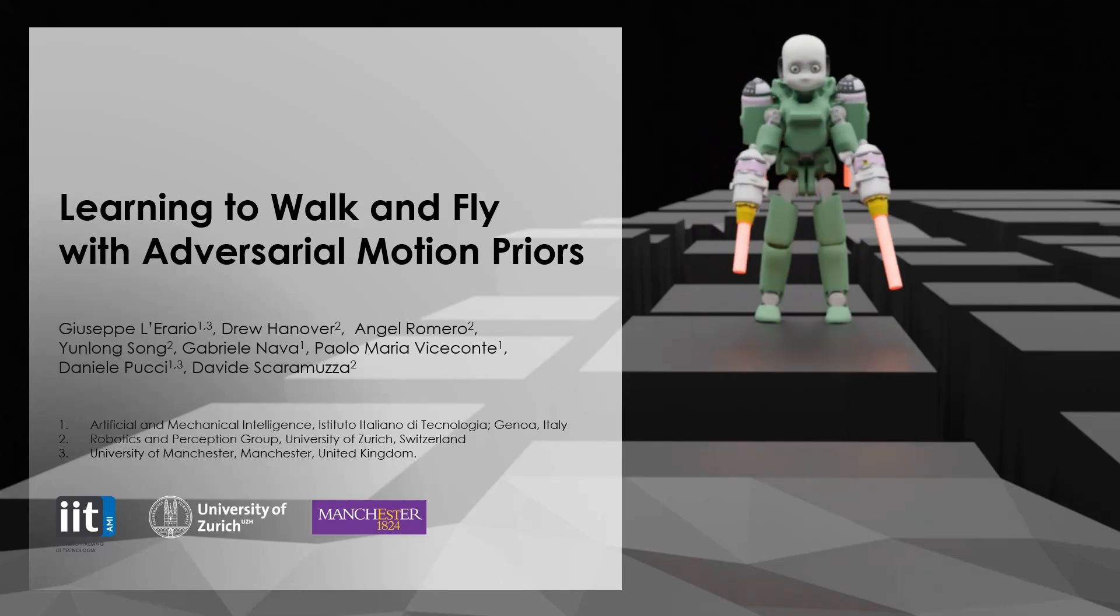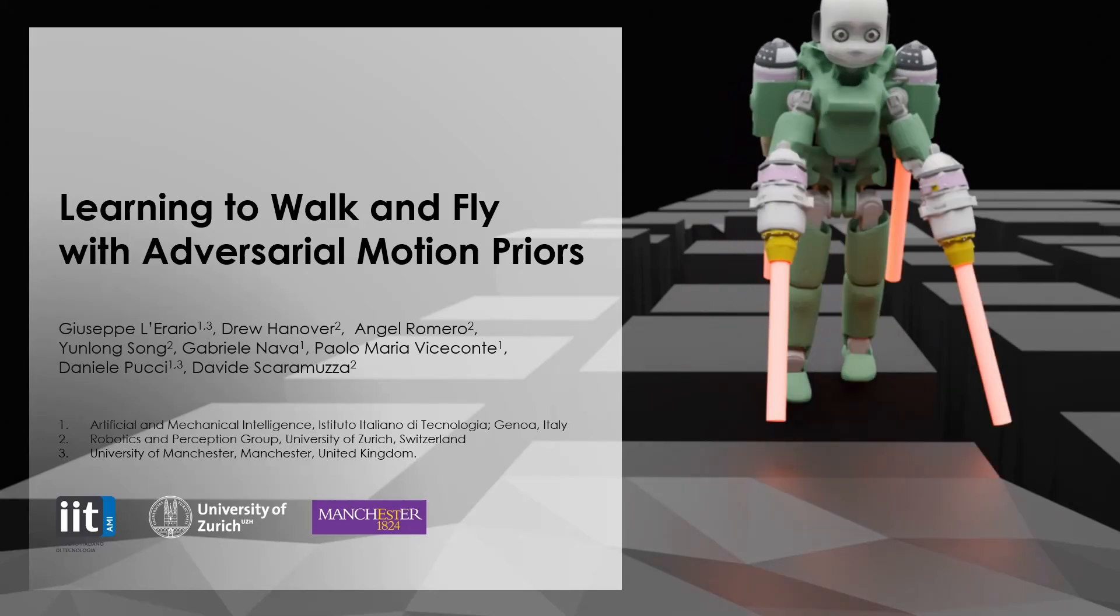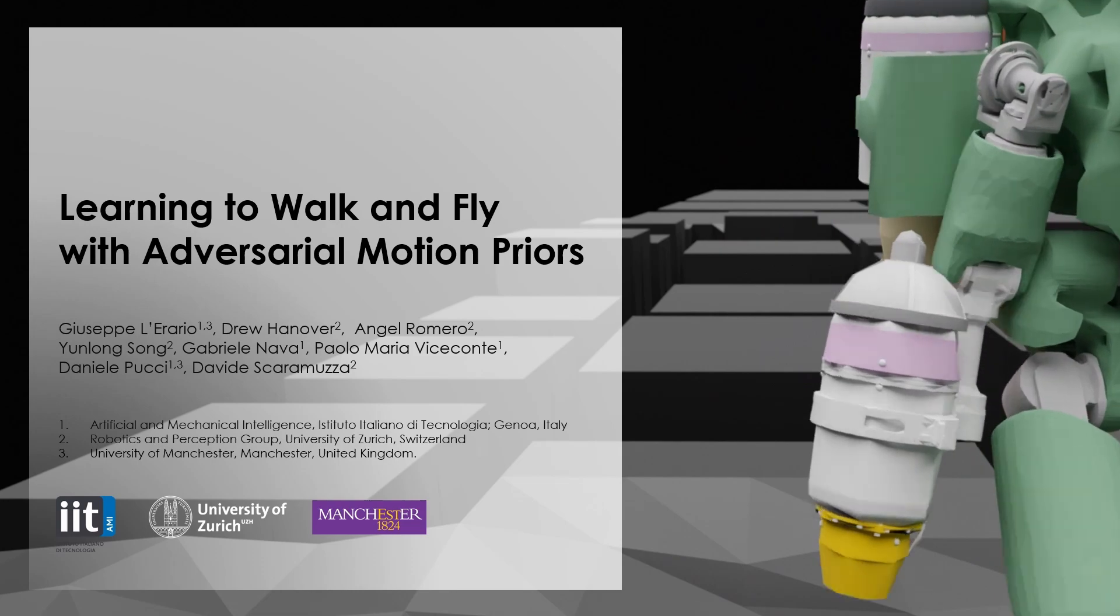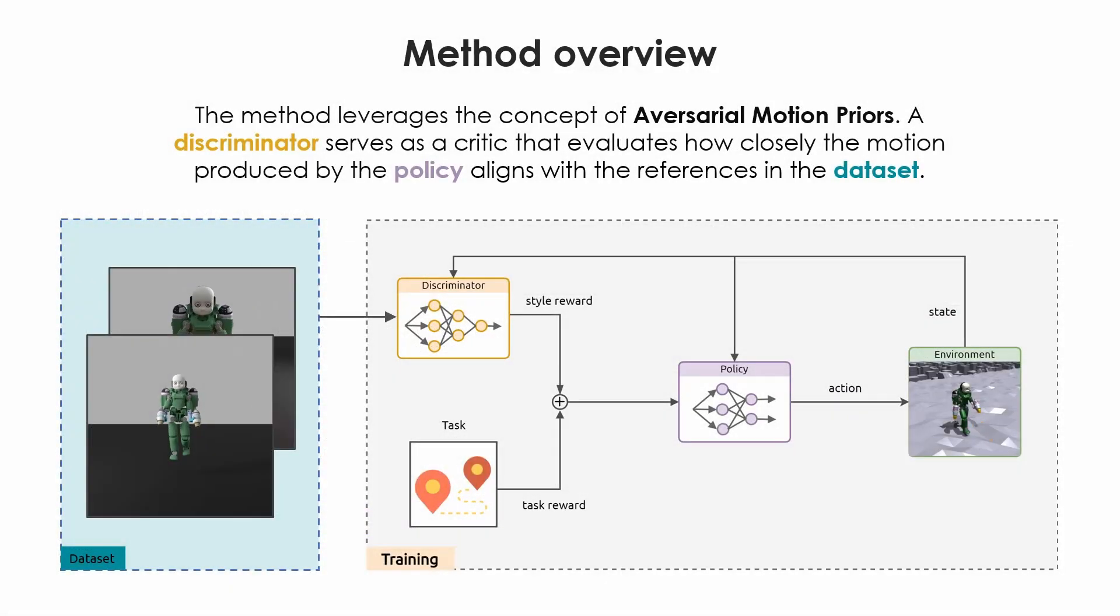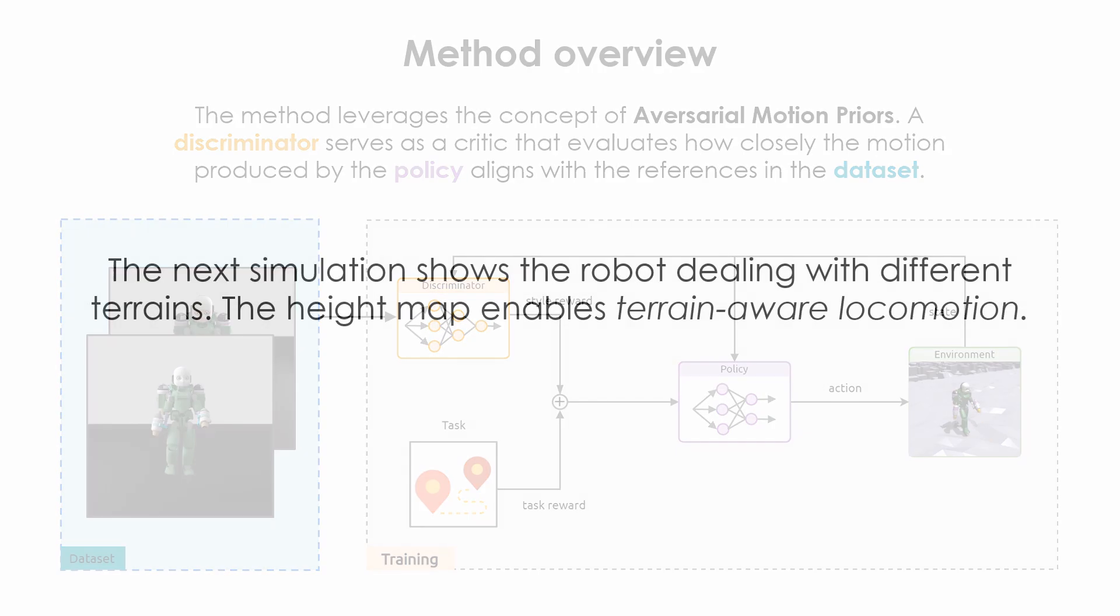This video presents the paper entitled Learning to Walk and Fly with Adversarial Motion Priors. The approach leverages the concept of AMP, allowing the robot to imitate walking and aerial locomotion patterns.